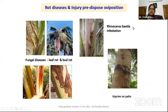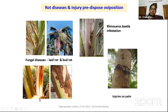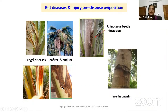Certain factors predispose the palm to attract the pest for egg-laying. These are fungal diseases like leaf rot and bud rot. Here you can see a leaf rot infected palm — this is the site, and a fermenting smell emanating from the rotting tissues attracts the weevil for egg laying. Here you can see the weevil laid eggs. The egg will hatch in one or two days and gain entry to the palm crown.